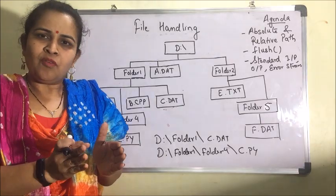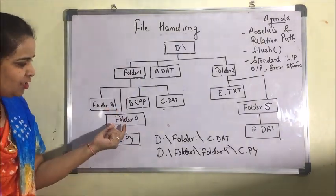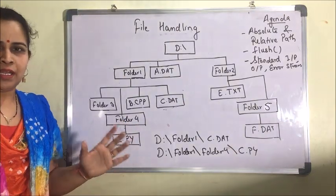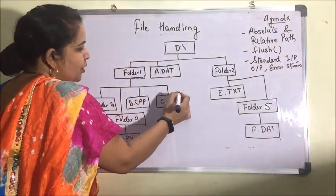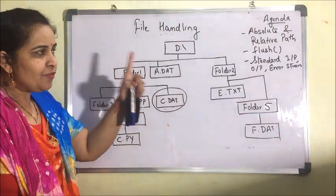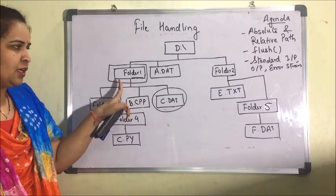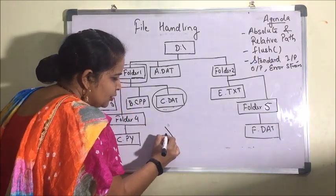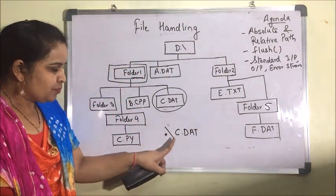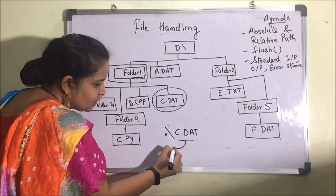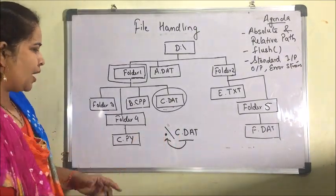Relative path is basically the location of the file relative to the current working directory. Current working directory means the folder we are currently working in. It gives the path according to the current working directory. For example, if I am in this folder and I want to access c.dat which is in the same folder, I can write: backslash dot dot backslash c.dat — meaning the file is present in the current directory.